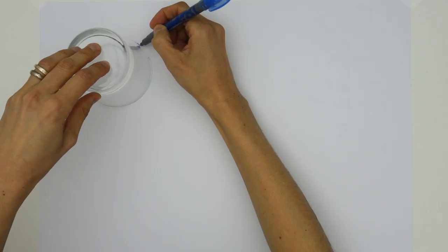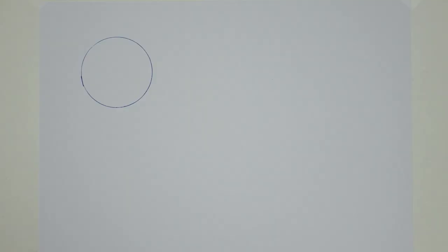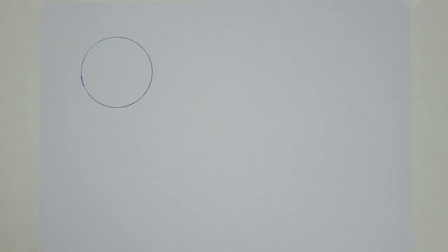We will start by tracing a circle with a compass or with any other round object that has the desired diameter. For a standard bolster it's usually around 24 cm.